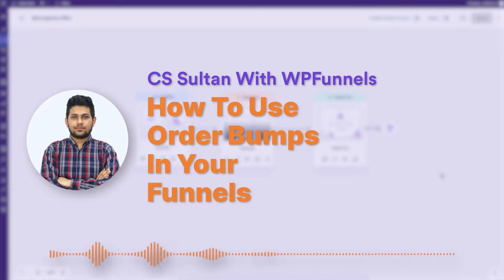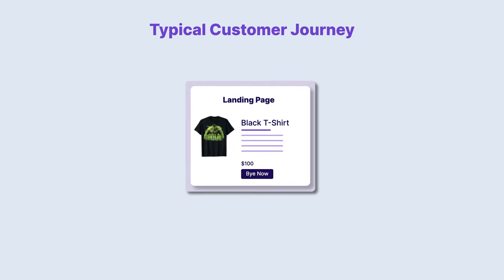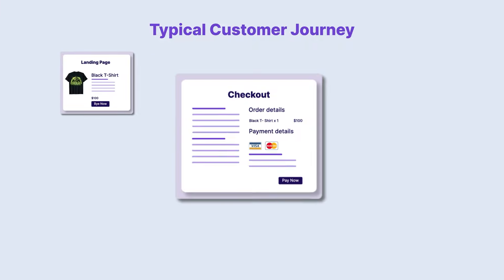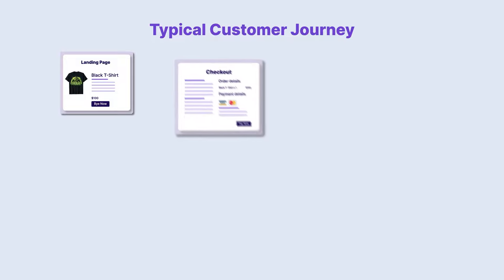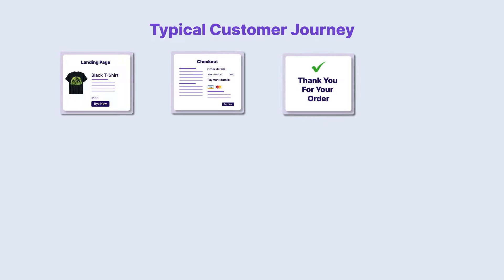Hey everyone, this is Sultan with WP Funnels. In this video, I'm going to show you how you can use order bumps to increase your average order value. In a typical customer journey, a person first goes to a product landing page, accepts the offer, goes to checkout, and pays — let's say $100 — then goes to the thank you page, earning you about $100 from this customer.